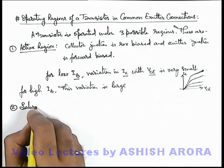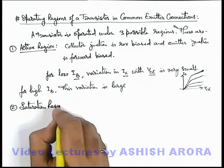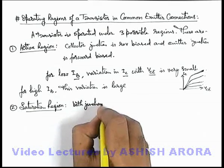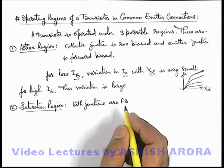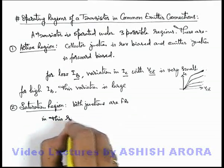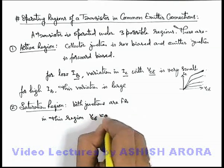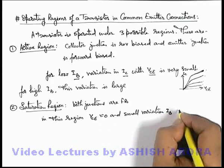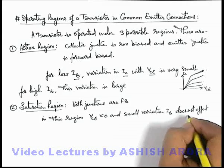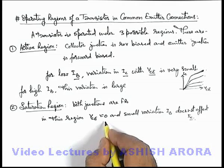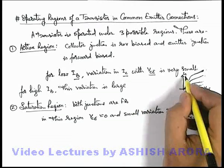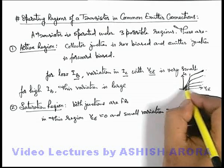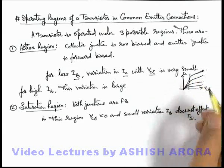The second one is the saturation region. In the saturation region, both junctions — that is the collector junction as well as the emitter junction — are forward biased. In this region, VCE is approximately zero, and a small variation in IB does not affect IC. But at higher variations of VCE, the change in IC is significant. For different values of IB the values of IC are approximately small, but for higher values the IC also significantly changes.